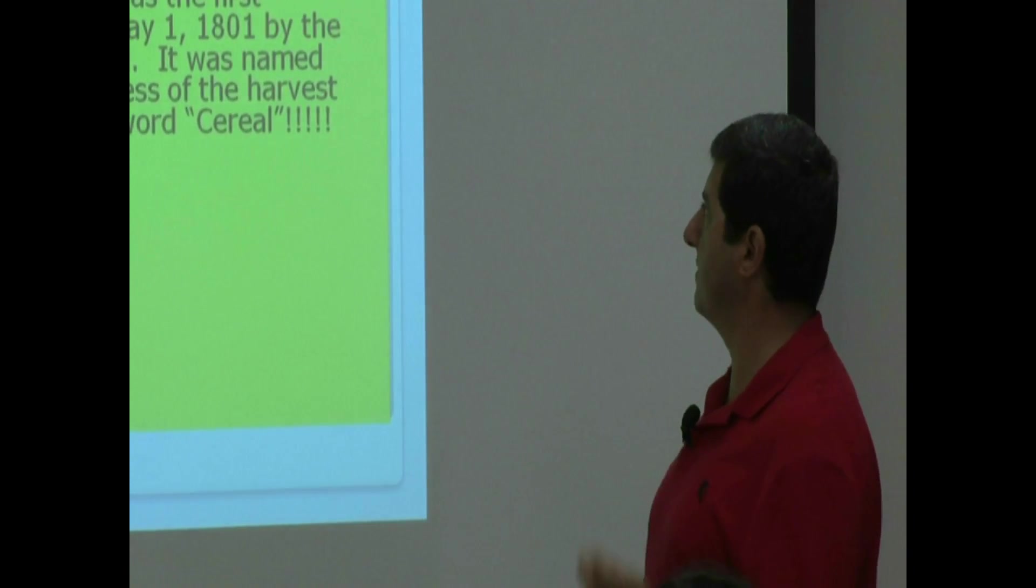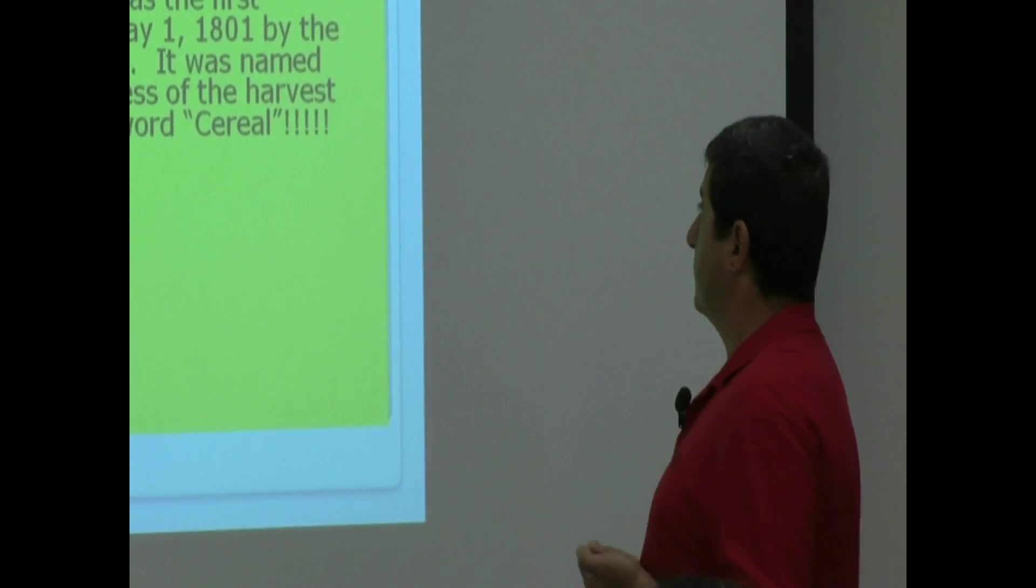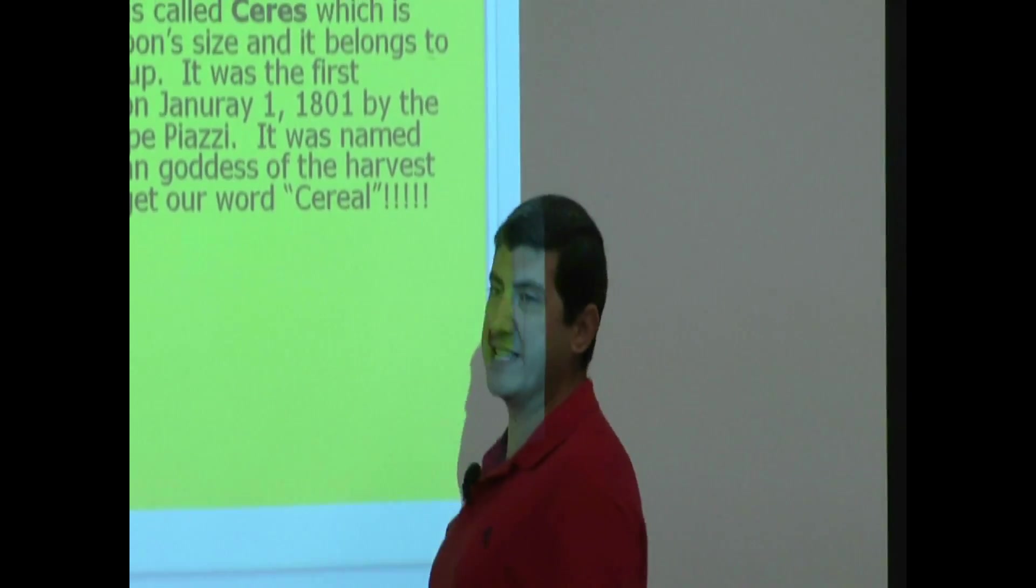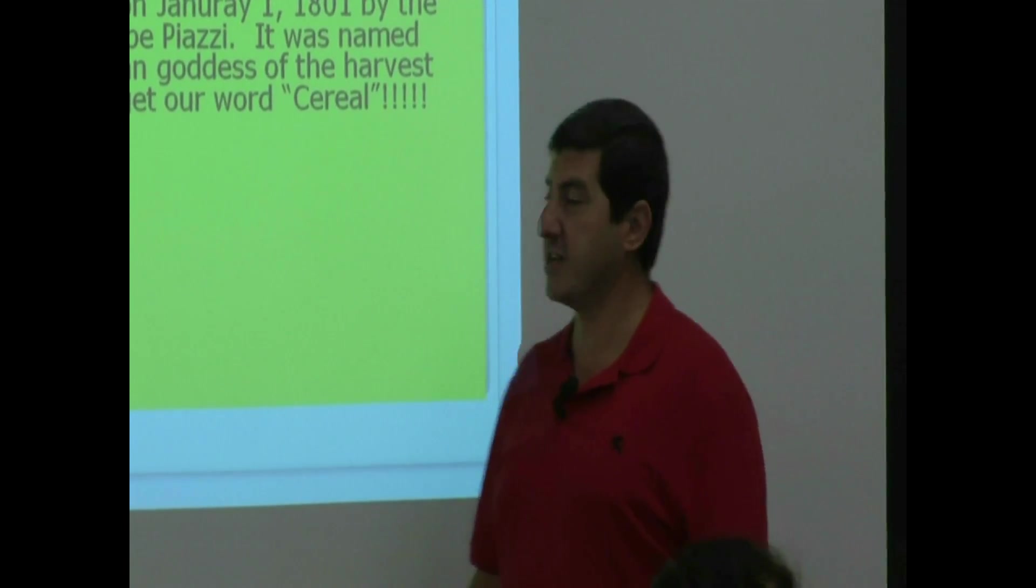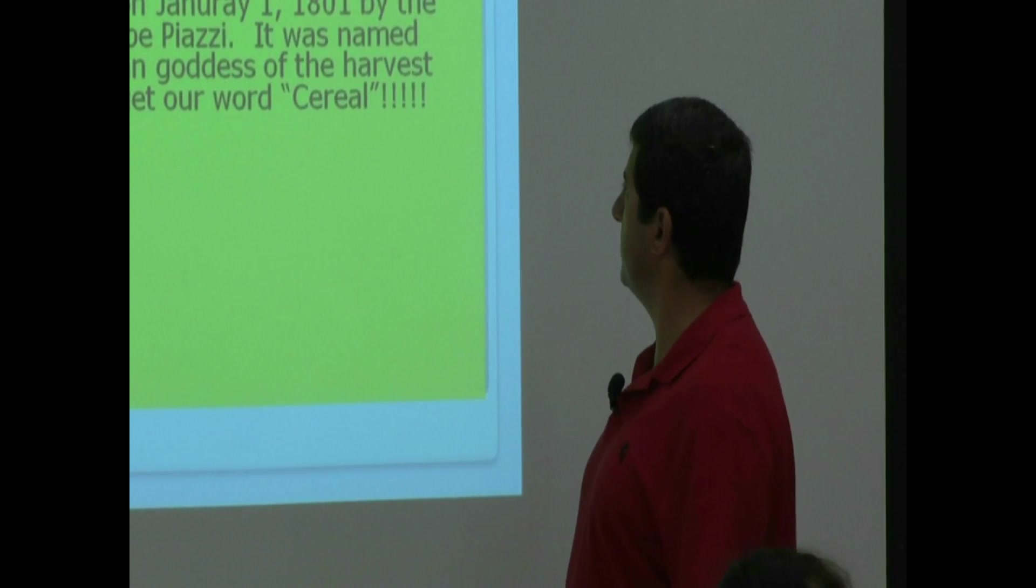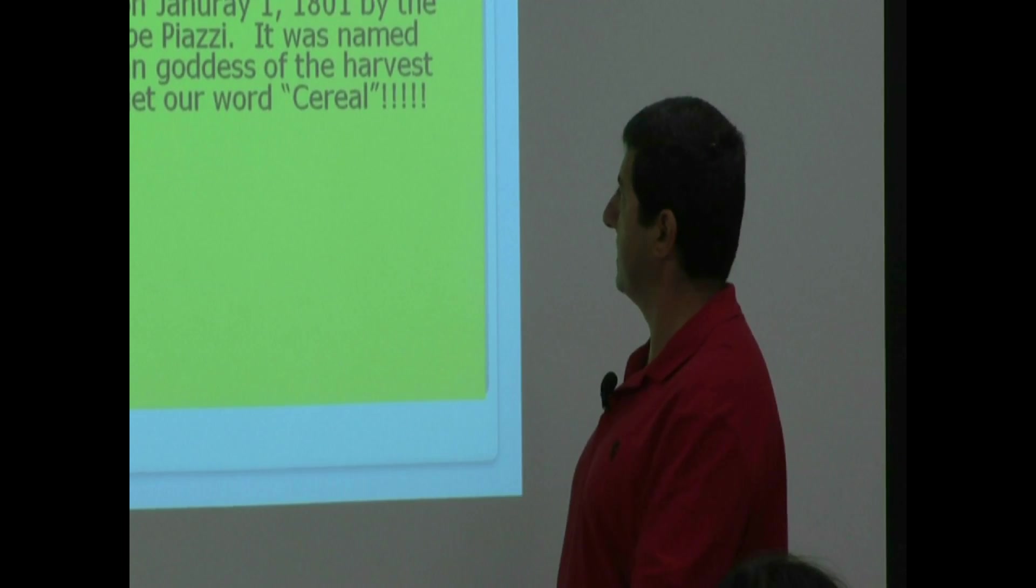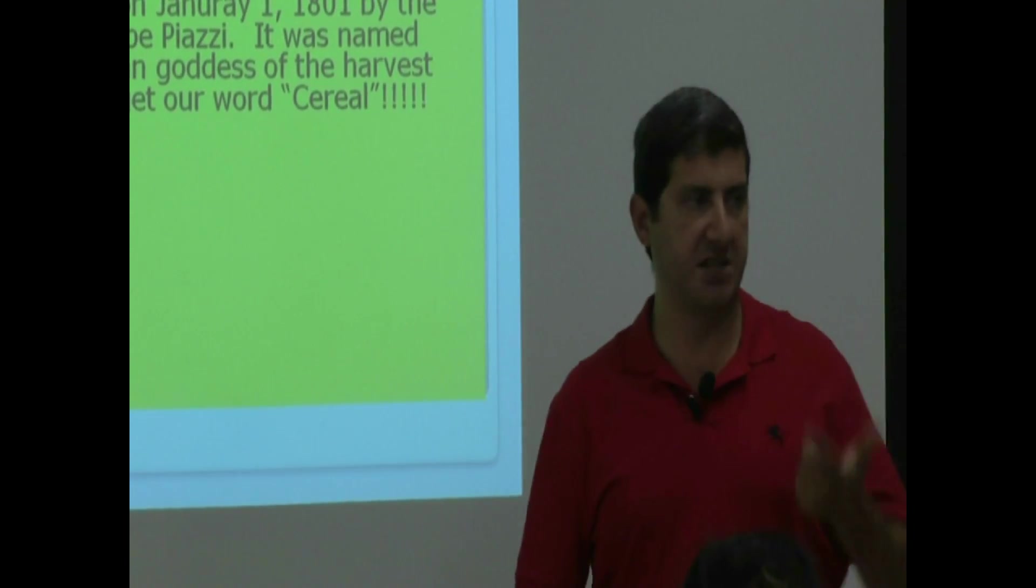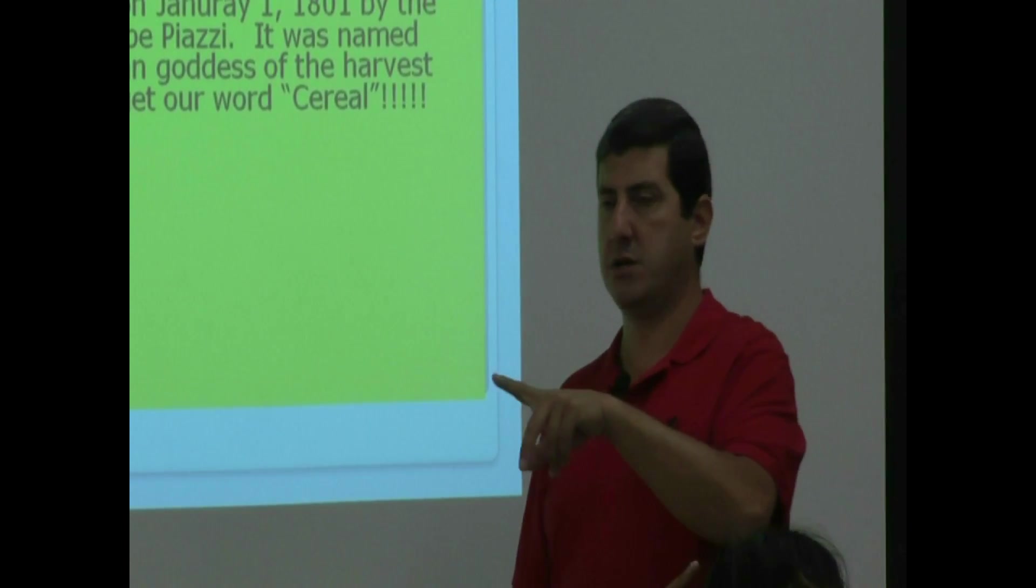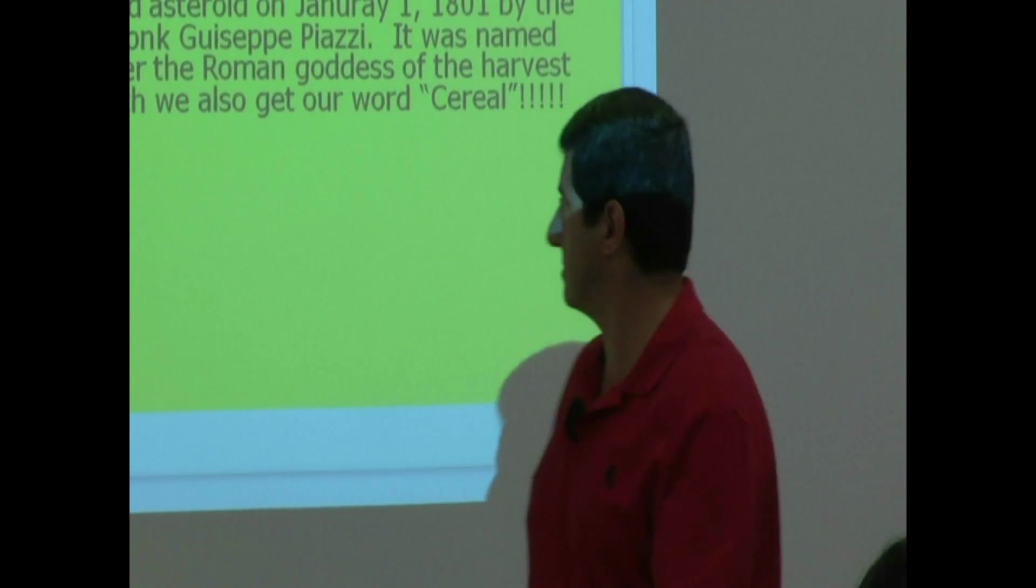It was the first discovered asteroid ever. It was discovered, it's interesting because it's the beginning of the 19th century, right? On the first day of the century. It's a good way to start the century, I guess. January 1, 1801, first day, by the Sicilian monk Giuseppe Piazzi. He was named Ceres after the Roman goddess of the harvest. From which we get our word cereal. Cereal, Ceres, harvest, right? Because cereal comes from wheat and stuff. So, that's kind of related, the terms.